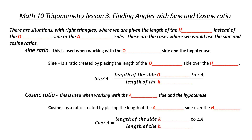So far, we've been able to find angles and sides using the tangent ratio, which is opposite over adjacent. However, there are some situations with right triangles when we're given the length of the hypotenuse instead of the opposite or the adjacent. These are the cases where we would use the sine and cosine ratio.